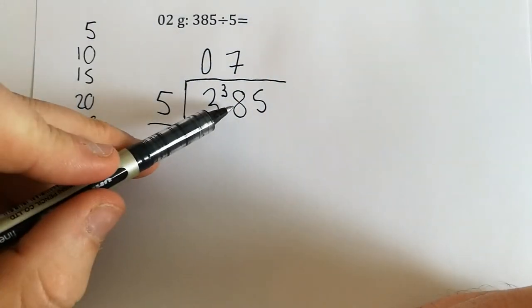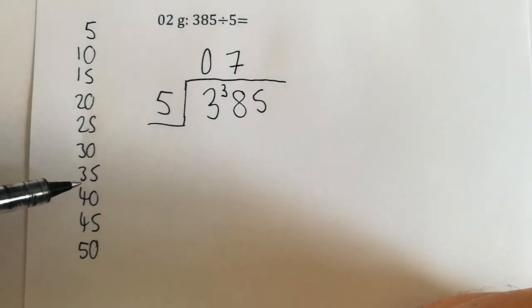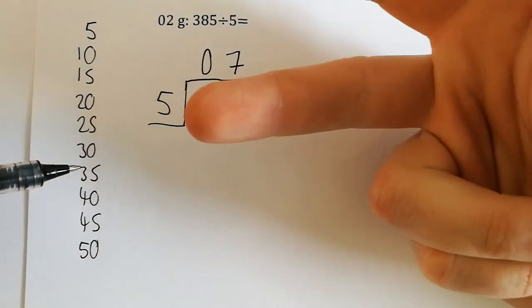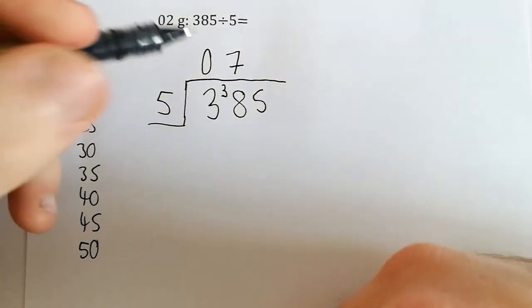So we had 38, we've used up 35 of them, so you can count up 36, 37, 38. So we've got 3 left over.